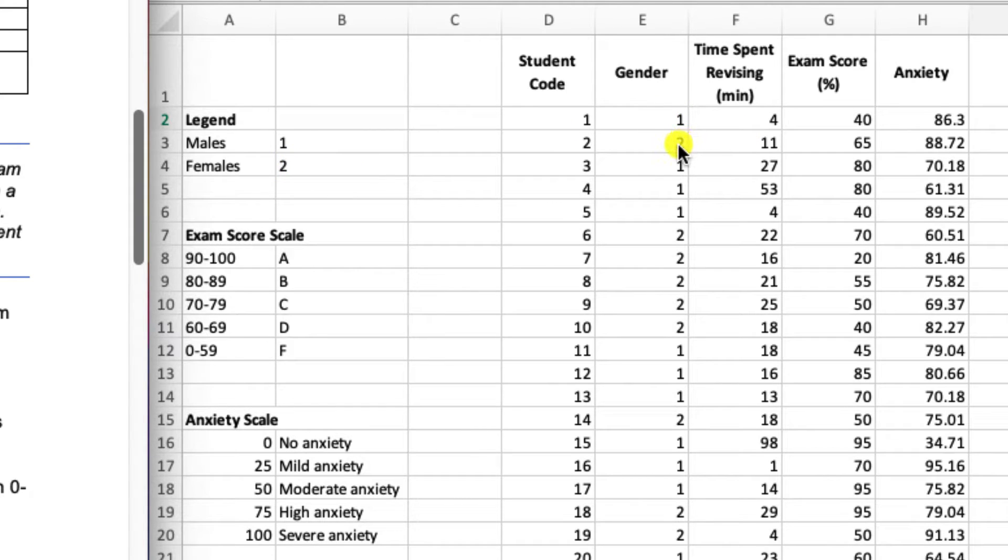So males have a data label of 1, females have a data label of 2. The exam score scale goes as follows, which is kind of like our typical letter grade scale. And then the anxiety scale kind of shows you what each of the values would indicate on a continuous scale from 0 to 100. So 0 being no anxiety, 100 being severe anxiety.